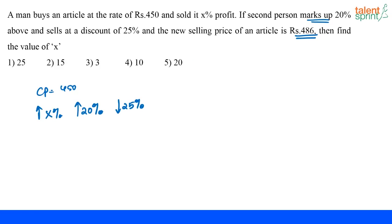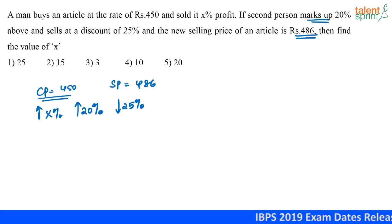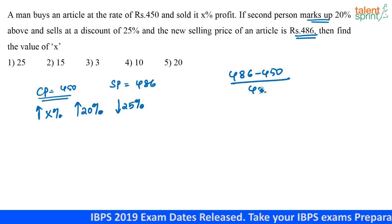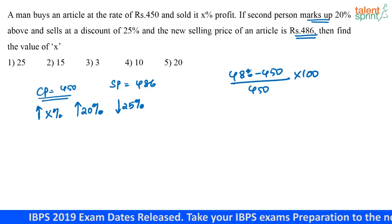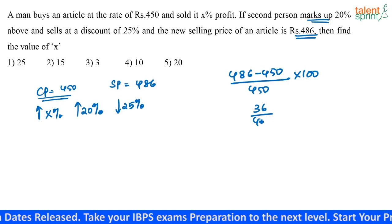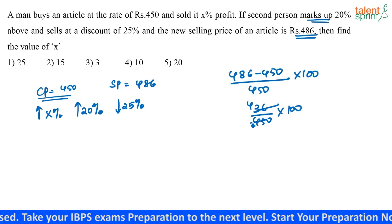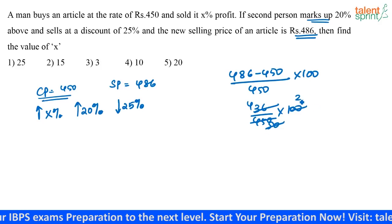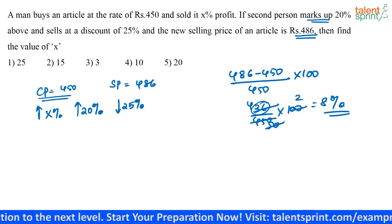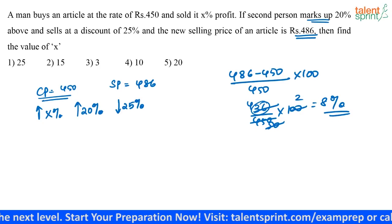The initial cost price is 450 and the final selling price is 486. The actual profit is (486 minus 450) divided by 450, into 100 — that is 36 by 450 into 100, which gives 8 percentage.